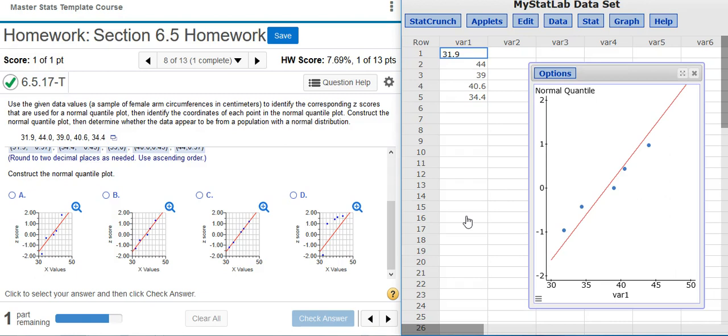Most students when they get to this point, they're looking for an exact match. But the way this is constructed, you just want to look for a general trend. So look at the general pattern that the points in your graph are making and find the answer option that has points with a similar pattern. Here that answer is going to be answer option B.